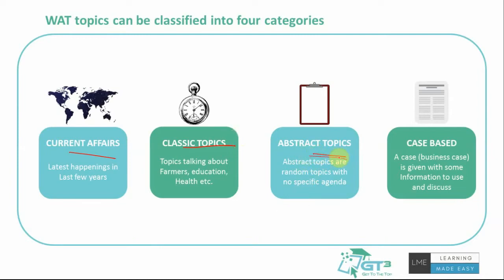Abstract topics are random topics with no specific agenda. You are asked to write by interpreting the topic on your own — it's all about being creative, coming up with multiple interpretations, and building on them. Finally, case-based topics provide a case to write about. It could be a simple three-to-four-line scenario asking what action you would take, or a lengthier case with four to five pages of information, data tables, where you study the material and write a plan of action based on the role you've been assigned.